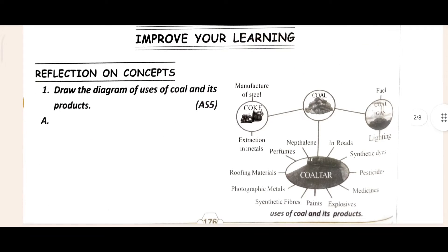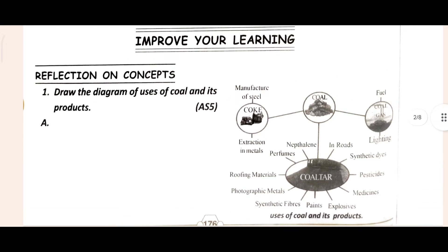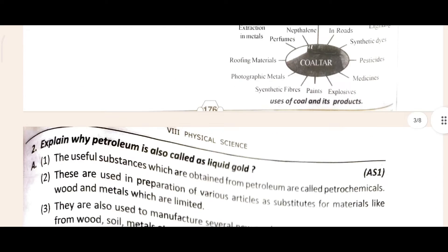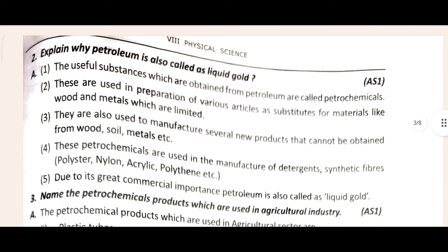After that, coming to improve your learning — first see the reflection on concept. The first question is to draw the diagram of uses of coal and its products. The diagram is given here so you can easily see it. The second question says: explain why petroleum is also called liquid gold. That answer is given here.